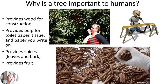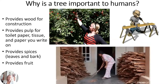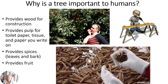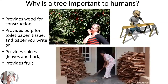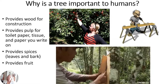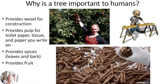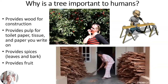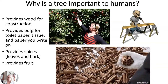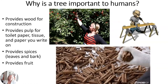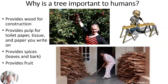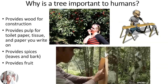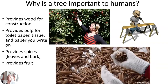Why are trees important to humans? We use the wood in construction, we use the pulp for toilet paper, tissues, the paper we write on, newspapers, and books. We use leaves and bark for spices, and many trees provide us fruit — you can see someone picking what looks like a plum.